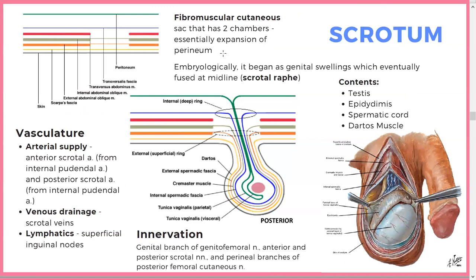Just as the layers of the peritoneum are important, so are the layers of the scrotum — it's an extension of those layers embryologically. Contents of the scrotum include the testes, epididymis, spermatic cord, dartos muscle, and associated fascias. The arterial supply is from the anterior and posterior scrotal arteries from the internal pudendal artery. Venous drainage is via scrotal veins, and lymphatics drain to the superficial inguinal nodes.